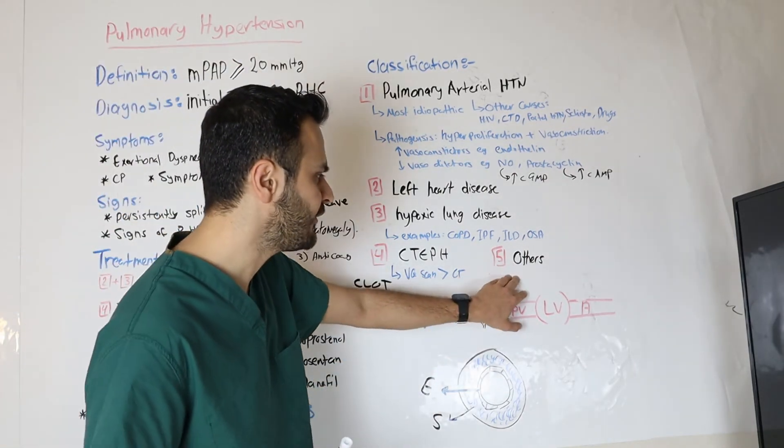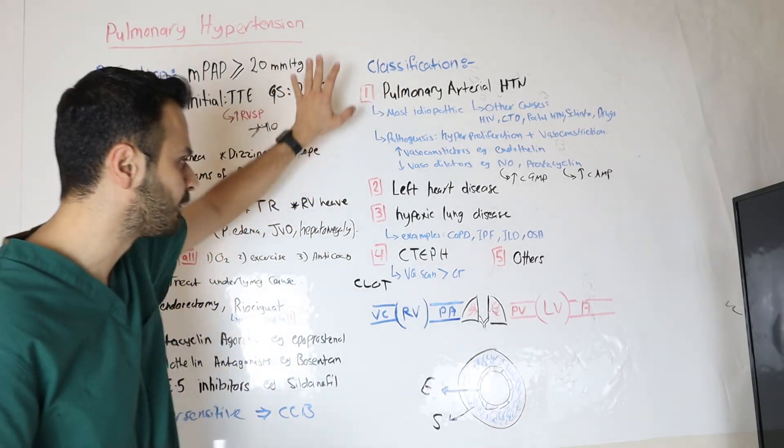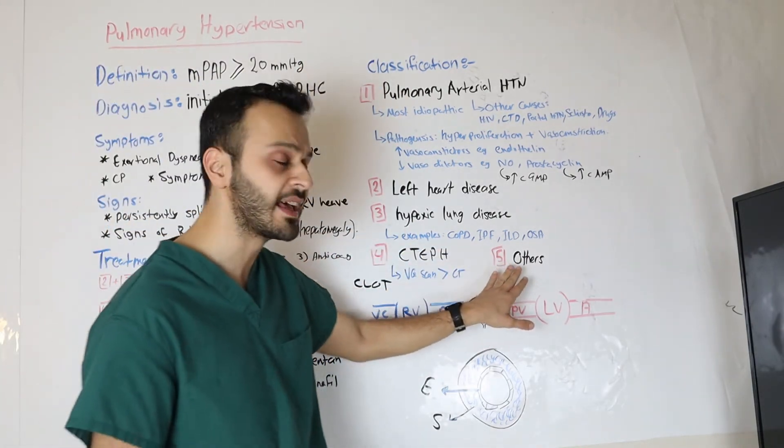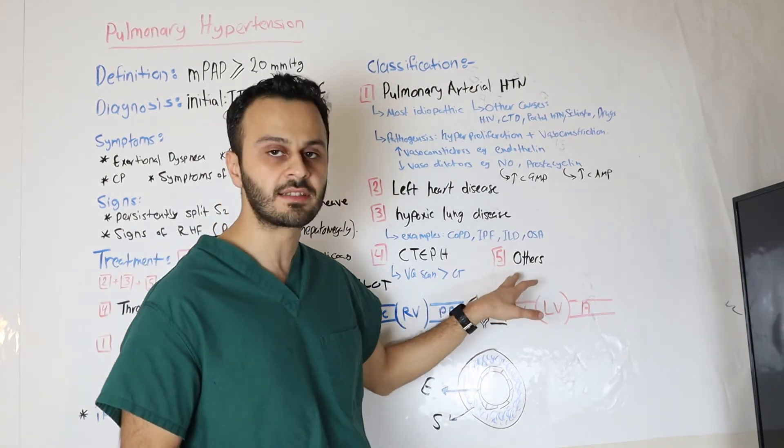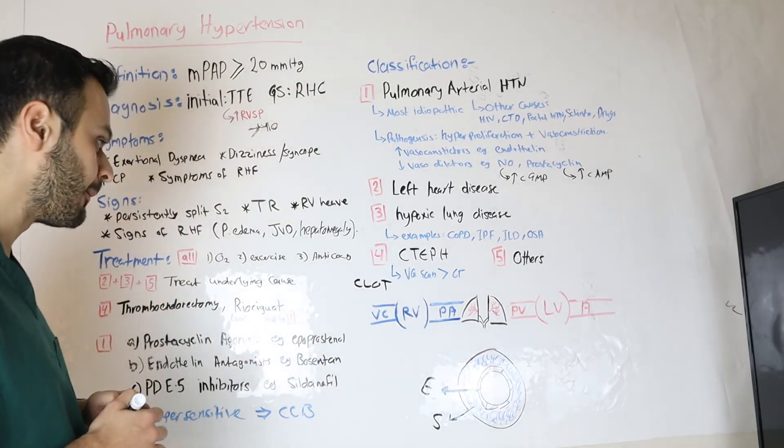The last class is class five. Basically, if there is a condition that I did not know where to put in from class one to class four, I would put it as class five. Under that, falls sarcoidosis, chronic renal disease, and the list goes on. You can look it up.